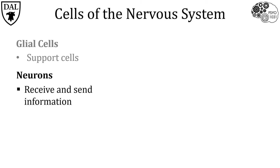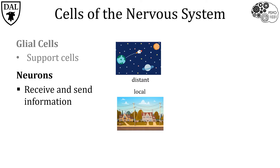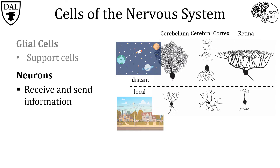Neurons are incredibly diverse in their shapes, functions, and communication targets. Generally speaking, neurons can be categorized into two different types: first, those that project to distant targets outside of their local structure, and second, those that project locally to targets within the same structure. Neurons are vastly diverse within each of these general categories.